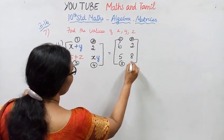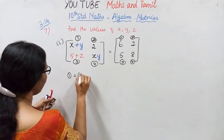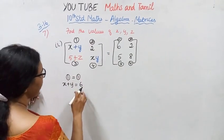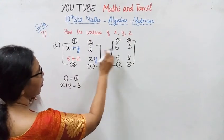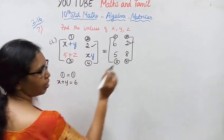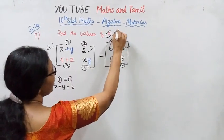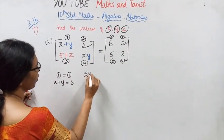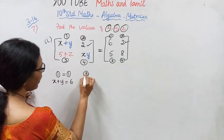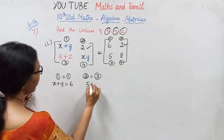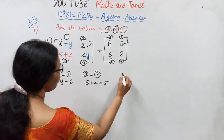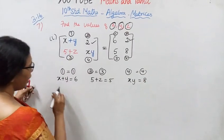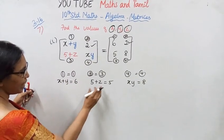From the given information: equation one gives us x plus y equal to 6. Equation two gives us yz as a drama — and the particular second area. Equation three gives us 5 plus z equal to 5. Equation four gives us xy equal to 8.